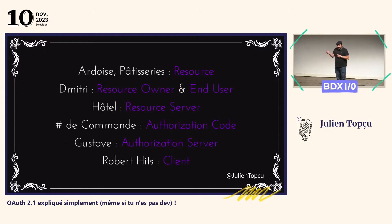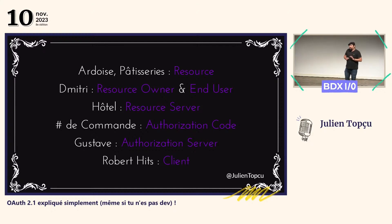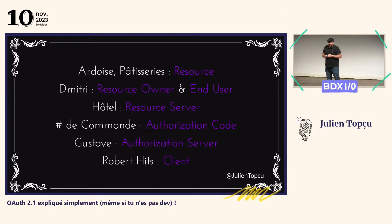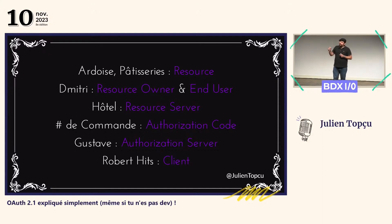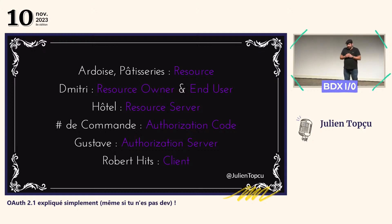To summarize what we just saw and replace the words of vocabulary: the ardoise and the pâtisserie are what we're trying to access in this scenario — they are the resources. Dimitri is the resource owner because the ardoise and pâtisserie pertain to him, but he's also the end user. The end user is the person who commands and asks the service. Sometimes these two people are not the same — in this case, it's the same person. The hotel is the resource server. The number of command is the authorization code. Gustave is the authorization server.